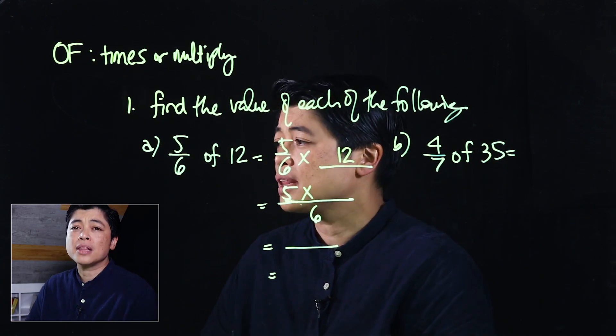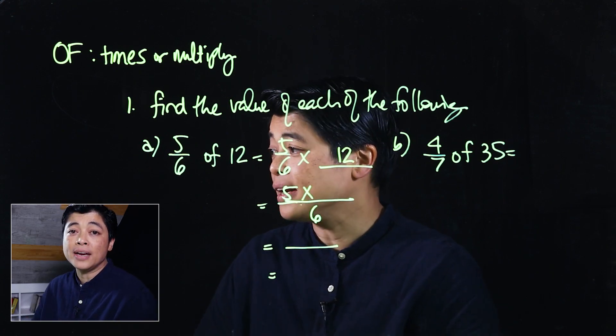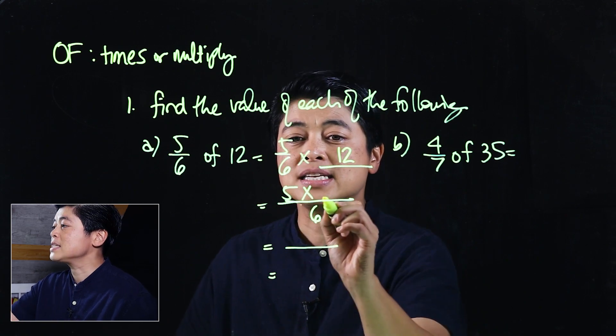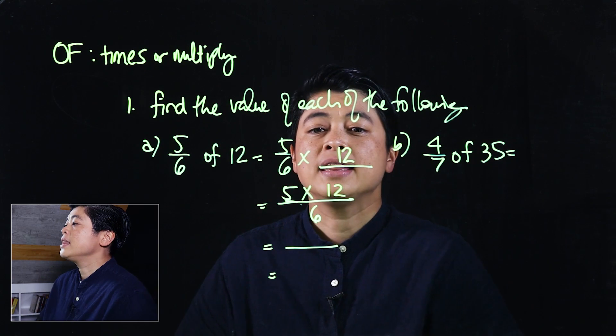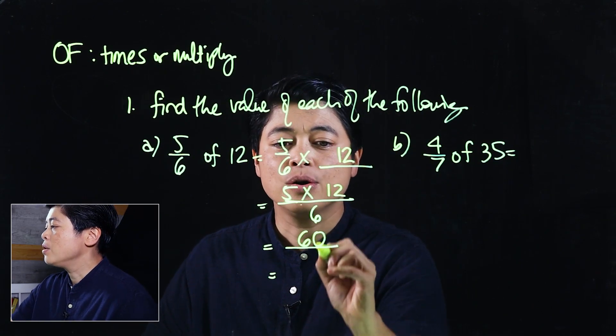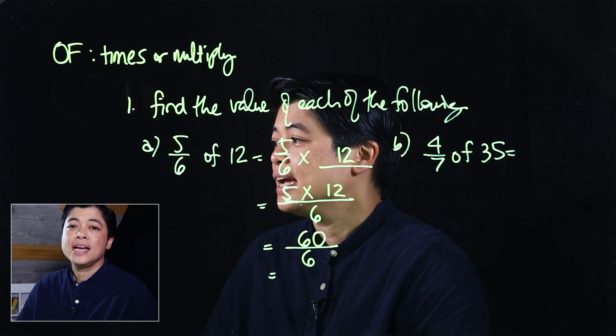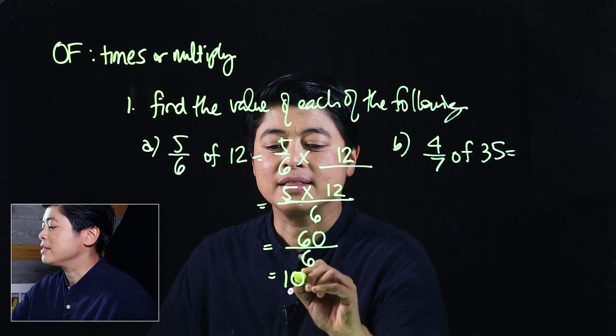We should remember that all whole numbers can be written as a fraction over 1, which means in the next step that's 5 times 12. If we multiply, that will be 60 over 6, and if we reduce or divide, this becomes 10.